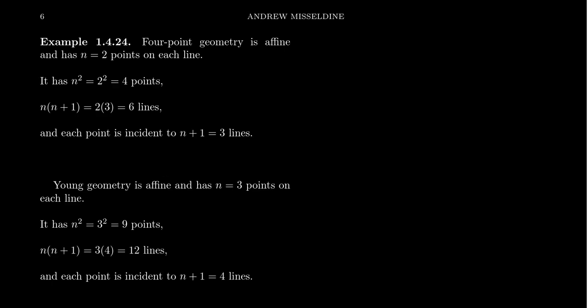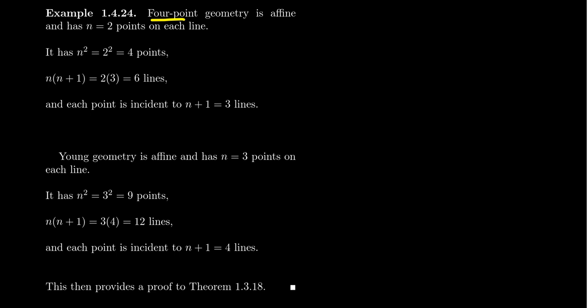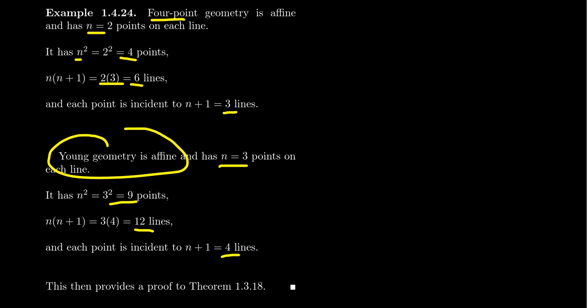To close with our examples: four-point geometry, order 2, has 2² = 4 points, 2×3 = 6 lines, and 3 lines on each point, with parallel families of size 2. Young's geometry, order 3, has 9 points, 12 lines, and 4 lines on each point; parallel families come in sizes of 3, and there are 4 parallel families. The theorems we proved in this video are, in fact, theorems of Young's geometry — plugging in n=3 recovers exactly the Young geometry results.